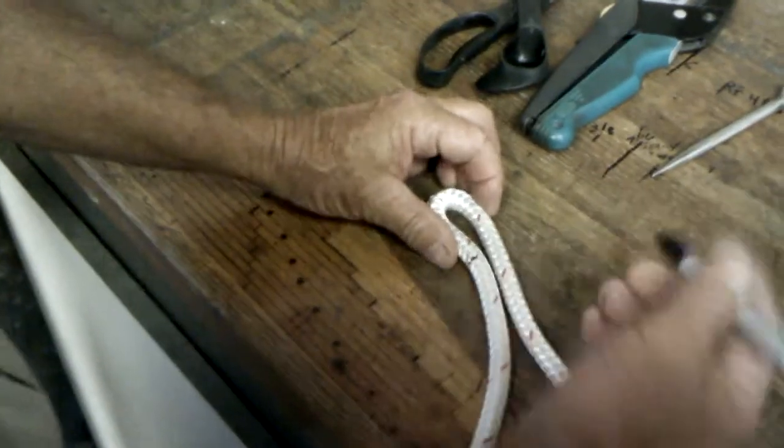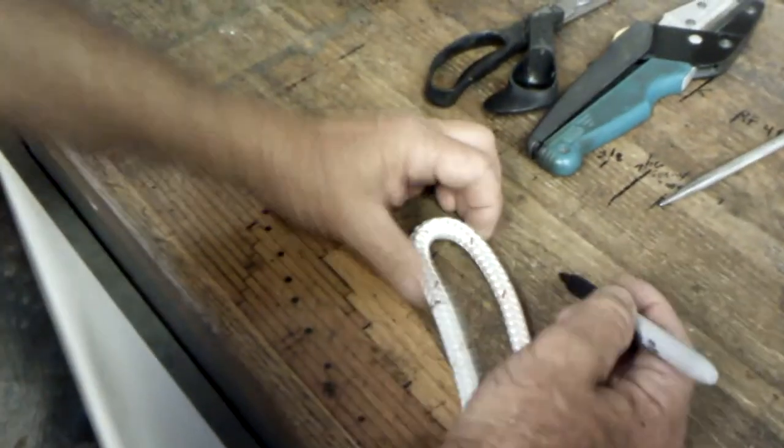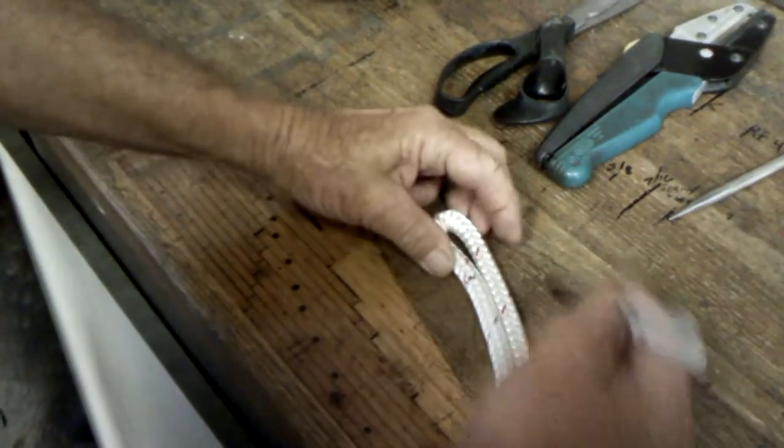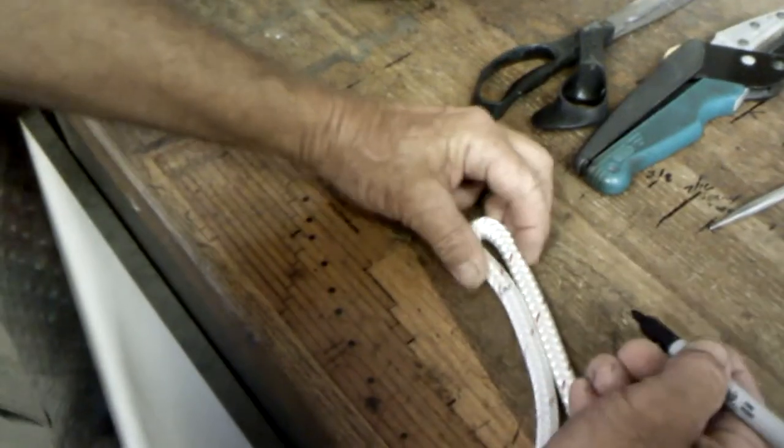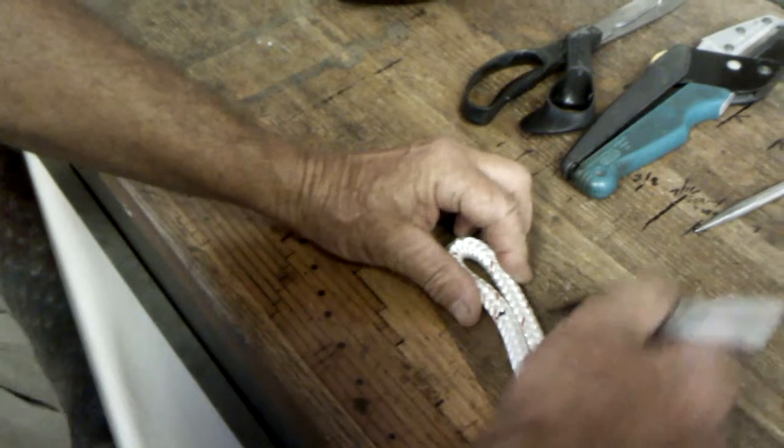Here we are making our eye size. We are going to make it a little bigger than we want it to be. We want it to be about that big, so we are going to mark it about that big.